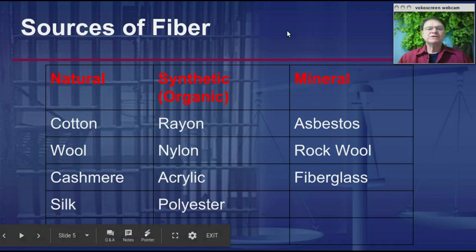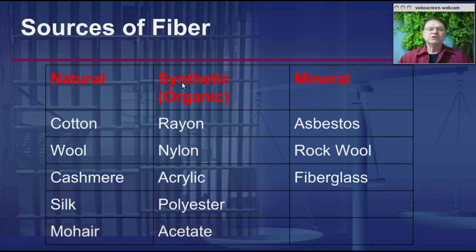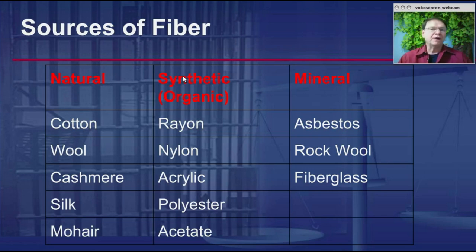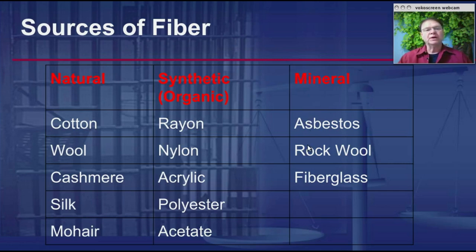There are also synthetic fibers: nylon, rayon, acrylic, polyester, and acetate. They are either synthetic — produced from petroleum products — or they are fibers modified chemically to produce a different product. There are also mineral fibers such as asbestos, rock wool, and fiberglass that fall under this category.